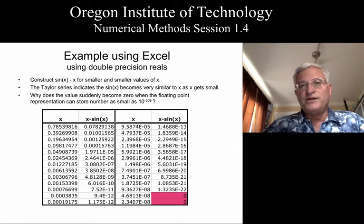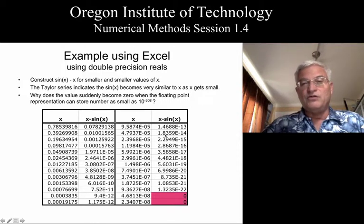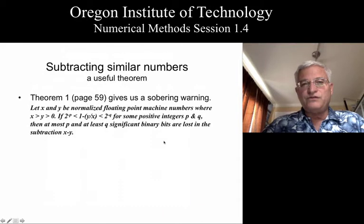The question that I want to raise is: are the numbers preceding this, are these subtracted numbers actually any good, or could they be degrading? The answer is the fact that they are degrading. So let's go to page 59 in your book, where a rather useful theorem is presented to us, and it's a theorem that helps us look at the degradation that occurs as you start subtracting similar numbers.